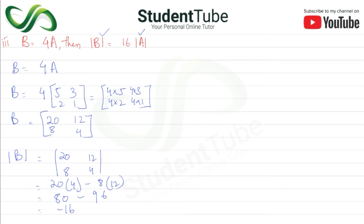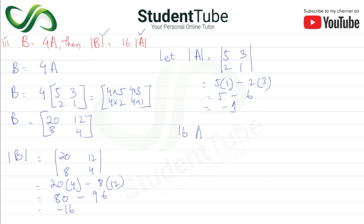Now we find det(A). We know the matrix A = [[5, 3], [2, 1]], so det(A) = 5×1 minus 2×3 = 5 minus 6 = minus 1. Now, 16 × det(A) = 16 × (−1) = minus 16.